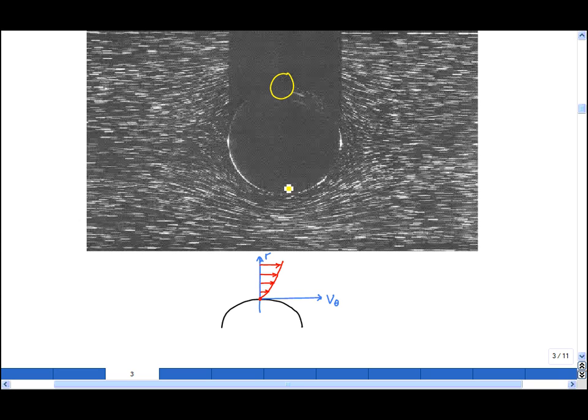For example, at this point and at this point around the sphere, the azimuthal velocity, vθ, as a function of the radius r, measured from the center of the sphere, looks like this. There is zero velocity on the surface of the sphere, and then the flow tends towards the free stream velocity, v, as r tends to infinity.